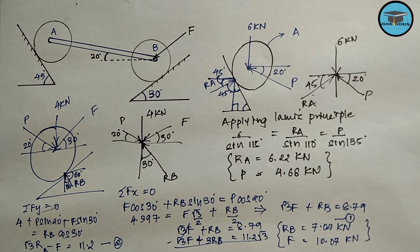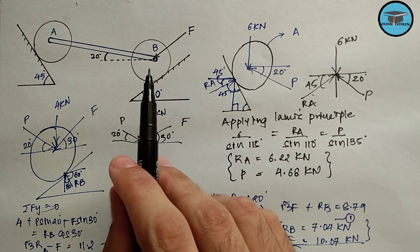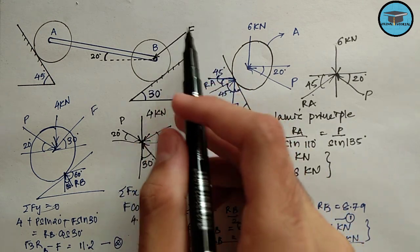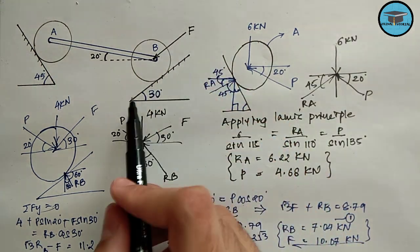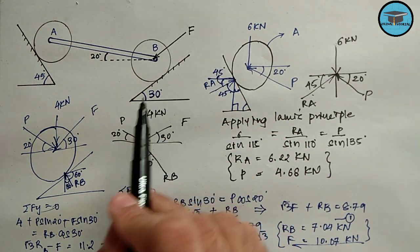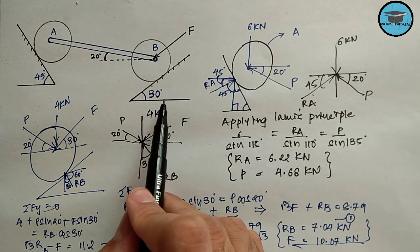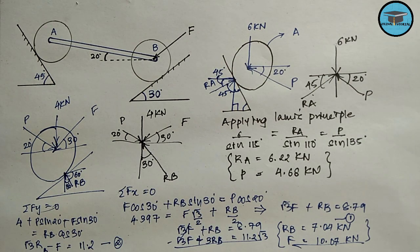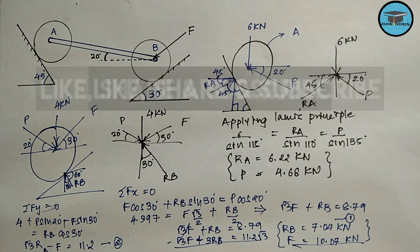We have obtained the value of F as 10.07 kN, which is required to hold the system in the given position. This force F is applied parallel to the plane, which is inclined at an angle of 30 degrees with the horizontal. If you have any doubts, comment in the comment section — thank you for watching!